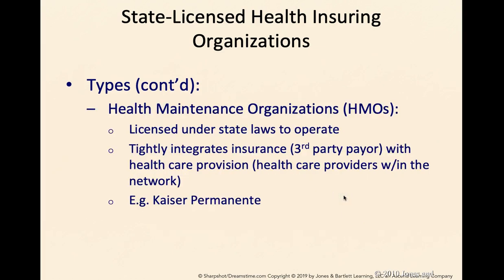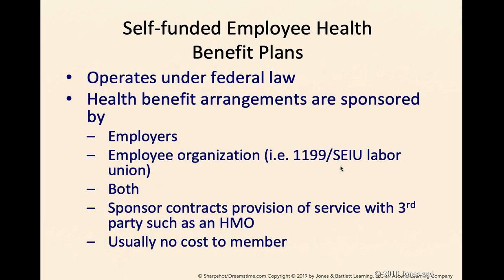The next type of state-licensed health insurance organization is the HMO — Health Maintenance Organization. They are licensed under state laws to operate in a particular state. This is managed care, and it tightly integrates the third-party payer source, which is the insurance company — they manage your care, meaning they only allow you to see providers within the network. If you have an HMO, you are required to choose a primary care provider within the network. A perfect example is Kaiser Permanente.